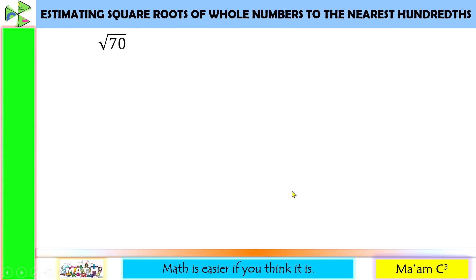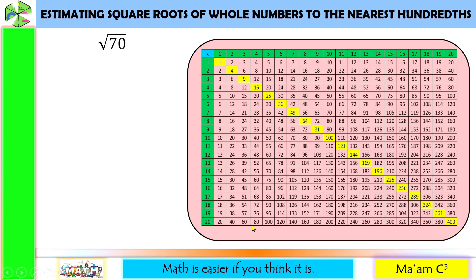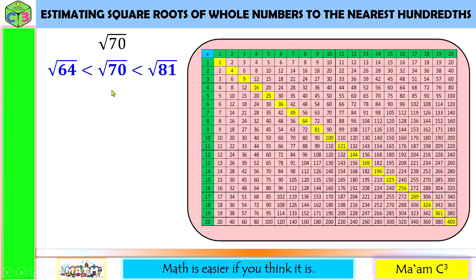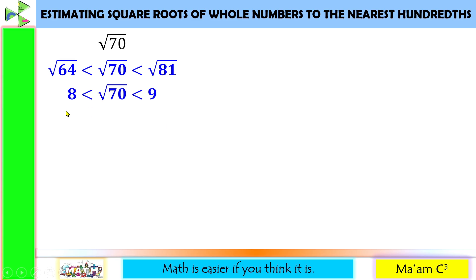Let us have another example: square root of 70. Square root of 70 is somewhere in between the square root of 64 and 81. So it means square root of 70 is less than the square root of 81 but greater than the square root of 64. The square root of 64 is 8 and the square root of 81 is 9. Obviously, 70 is closer to 64 than to 81, so square root of 70 is closer to 8 than to 9.